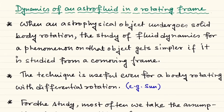The answer is very easy. Almost all astrophysical objects like planets, stars, accretion disks, and galaxies are rotating, as we already discussed in the last lecture.